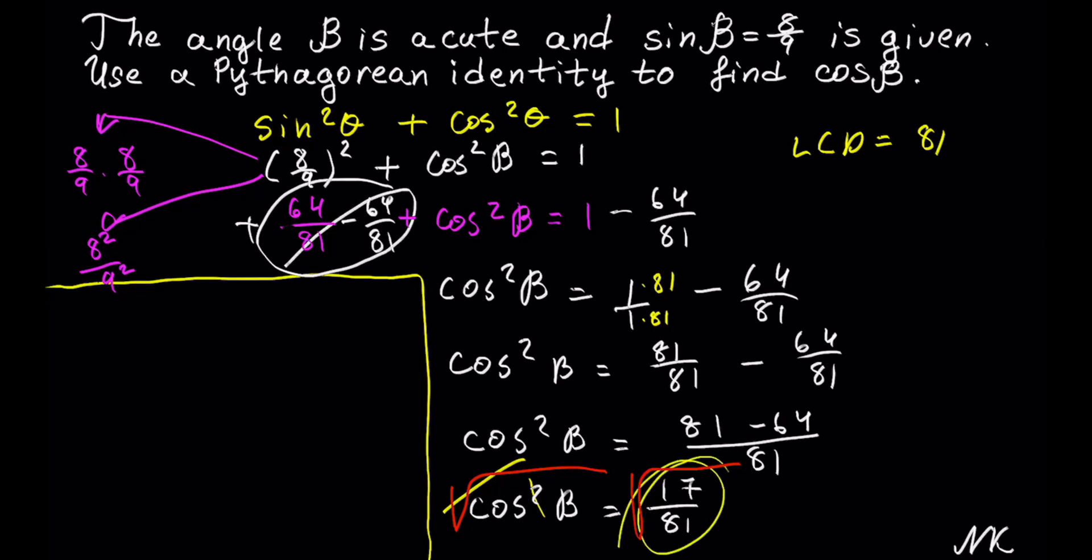When it comes to multiplication and division, we can separate the radicals. 17/81 is a division, so we get cos β = √17/√81.